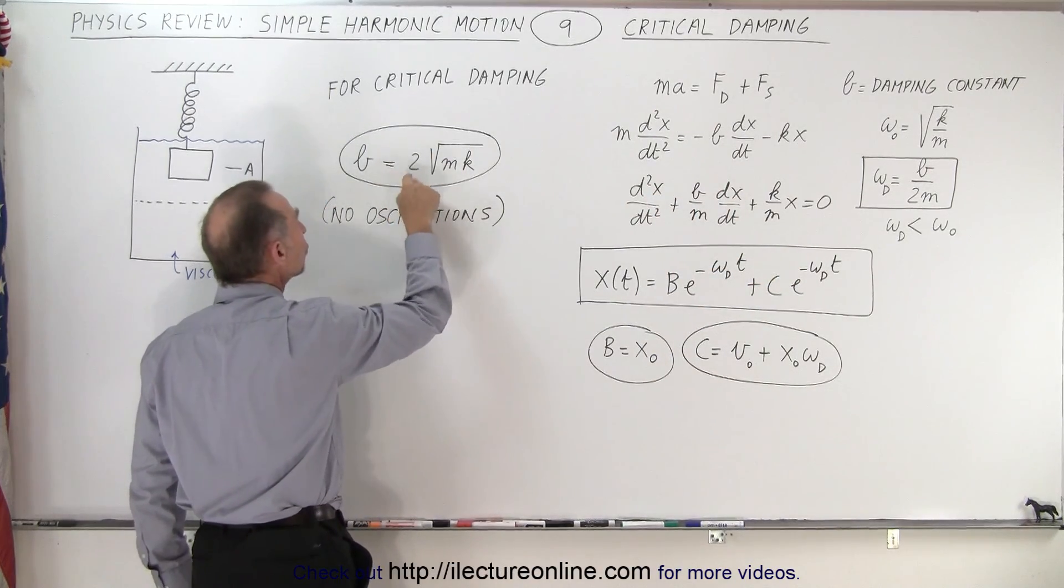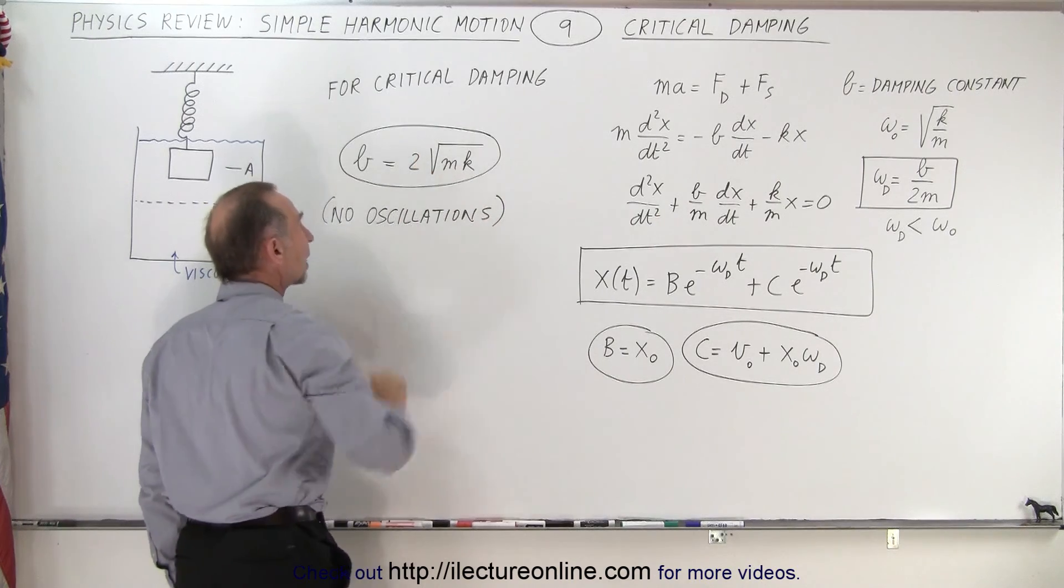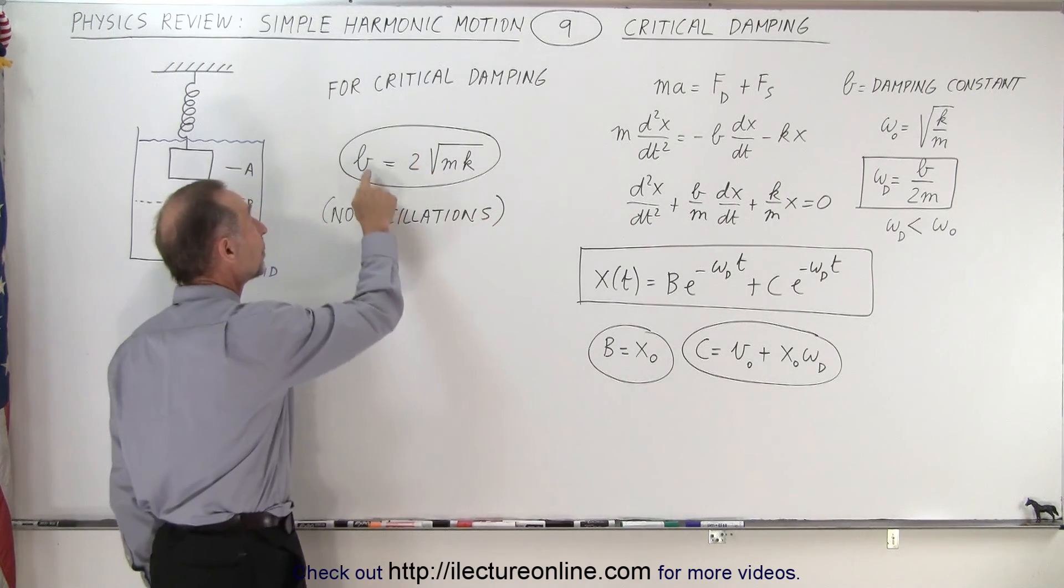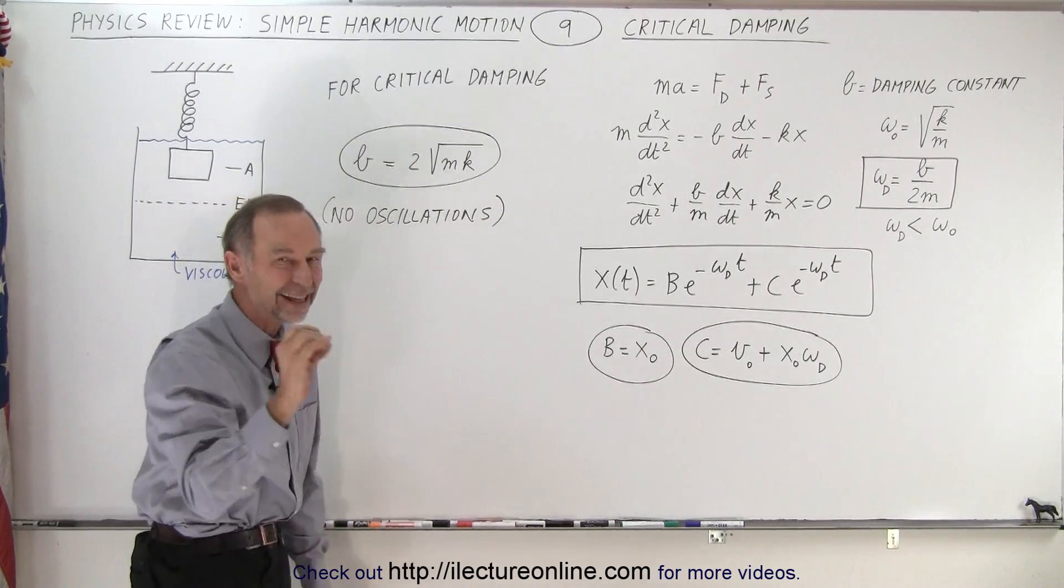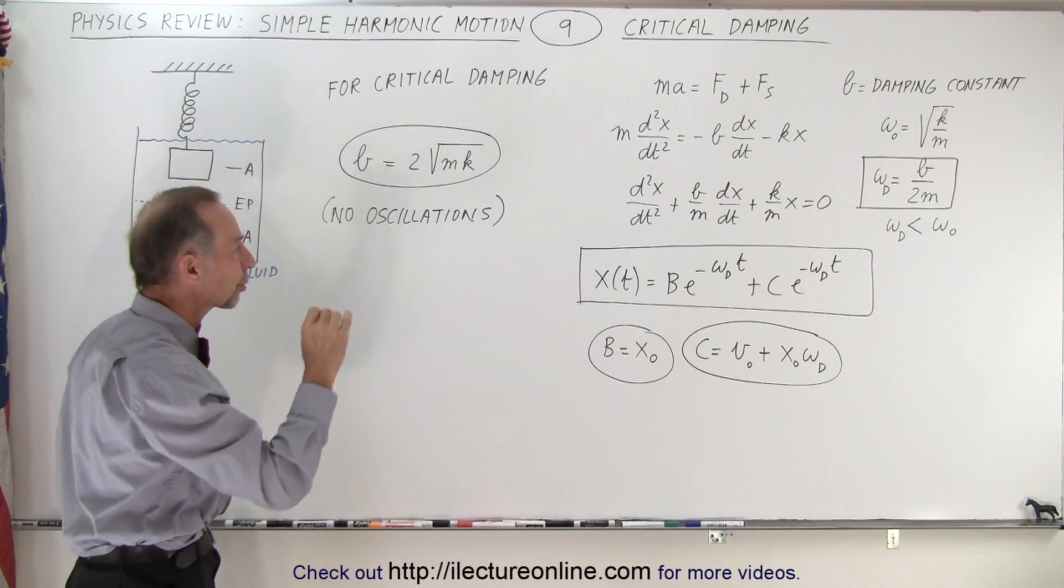which now must equal 2 times the square root of m times k. Remember for the underdamping case, B had to be less than that, but if it's exactly equal to that, you now have critical damping.